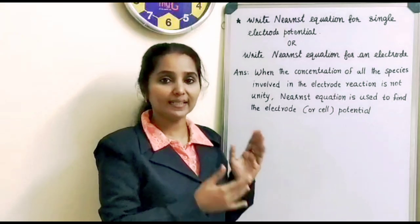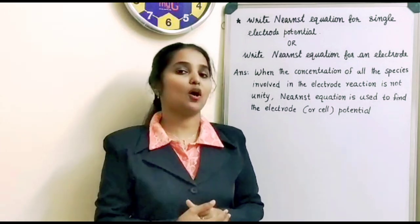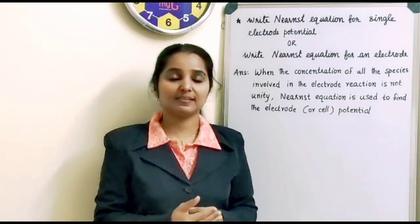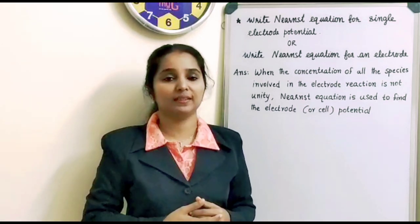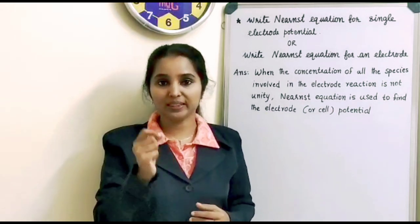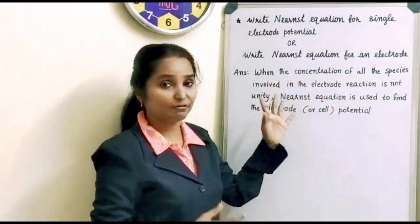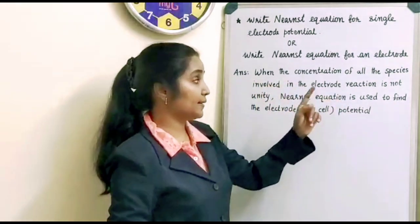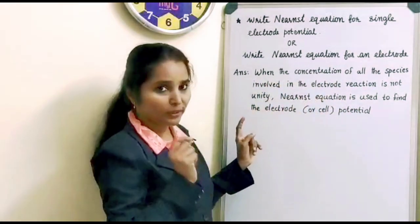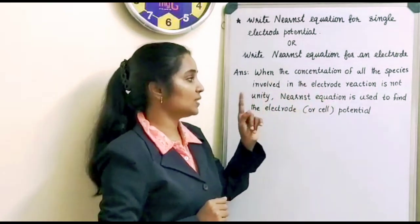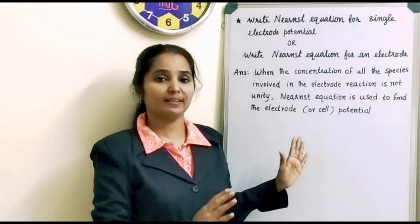In that case, how can we find out the electrode potential? That we can find out by using the Nernst equation. So when you start writing the answer, the first point you have to write is: when the concentration of all the species involved in an electrode reaction is not unity, we use the Nernst equation to find out the electrode potential or cell potential.